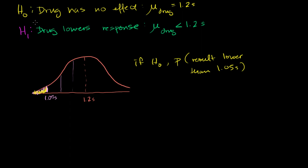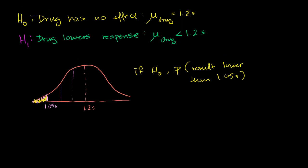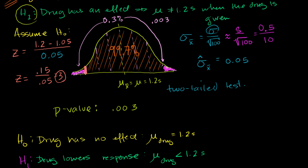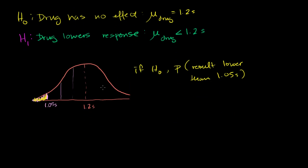So this right here would be a one tail test, where we only care about one direction below the mean. And if you look at the one tail test, this area over here, we saw last time that both of these areas combined are 0.3%. But if you're only considering one of these areas, if you're only considering this one over here, it's going to be half of that, because the normal distribution is symmetric. So it's going to be 0.13%. Or if you were to express it as a decimal, this is going to be 0.0015.